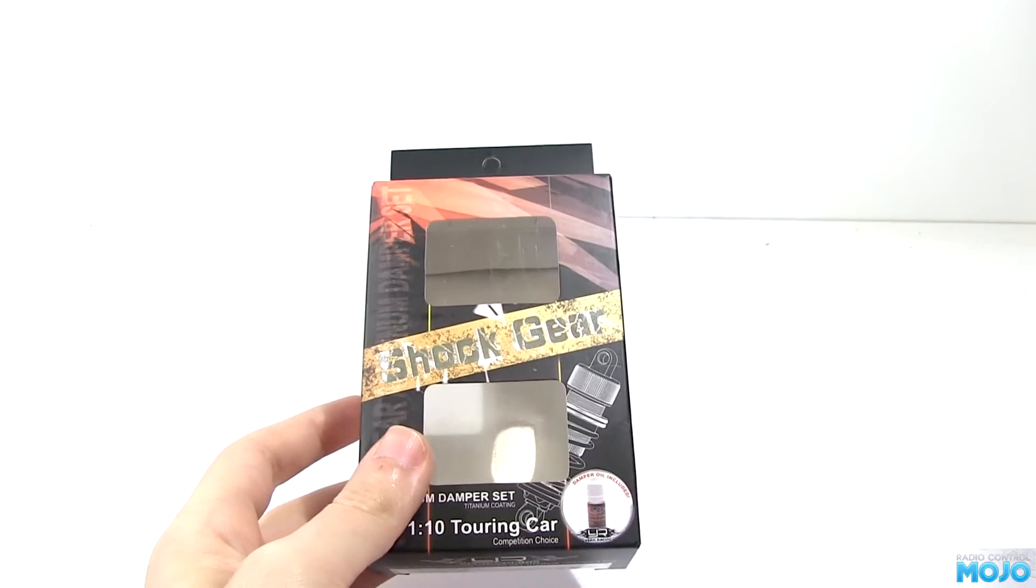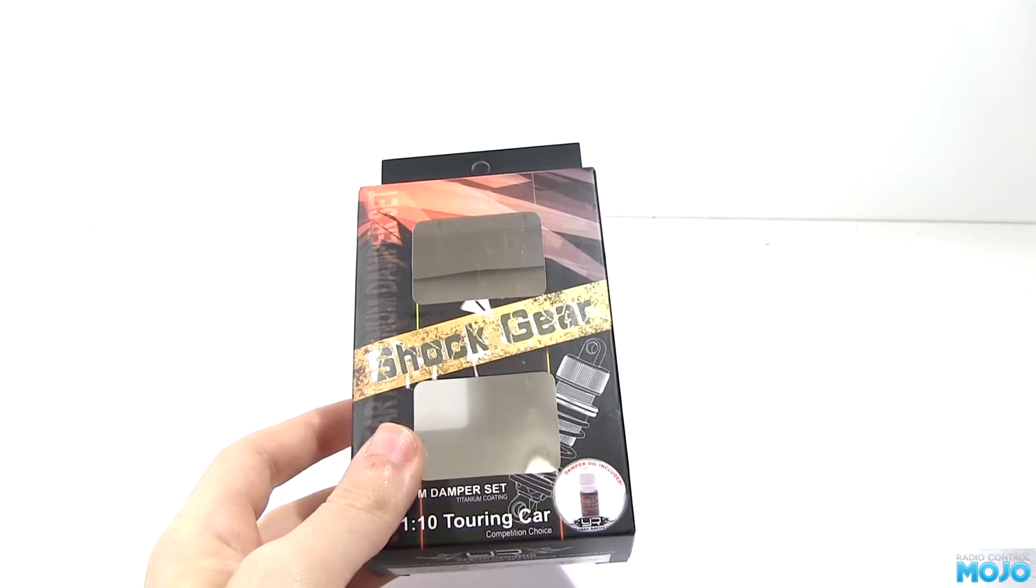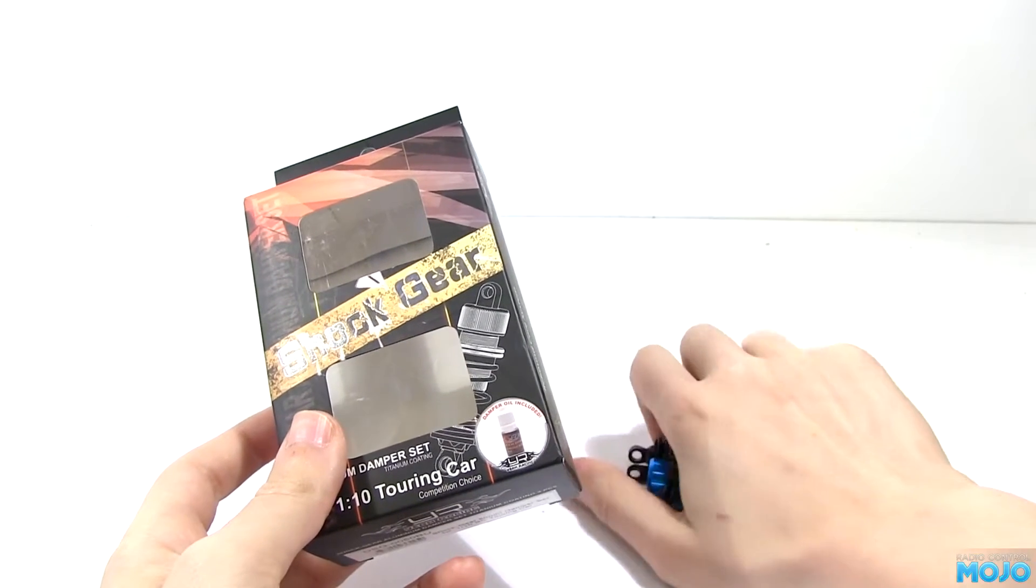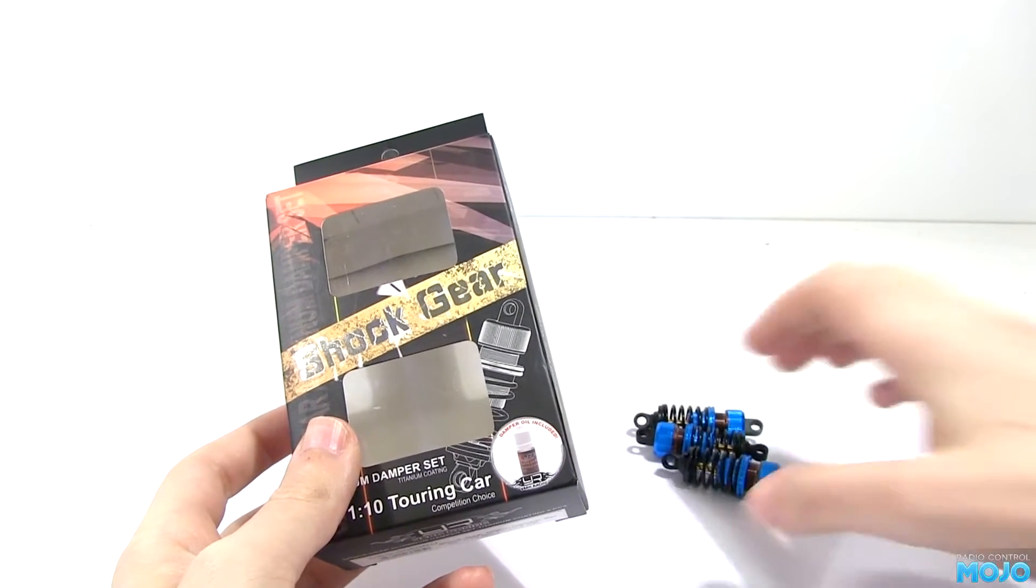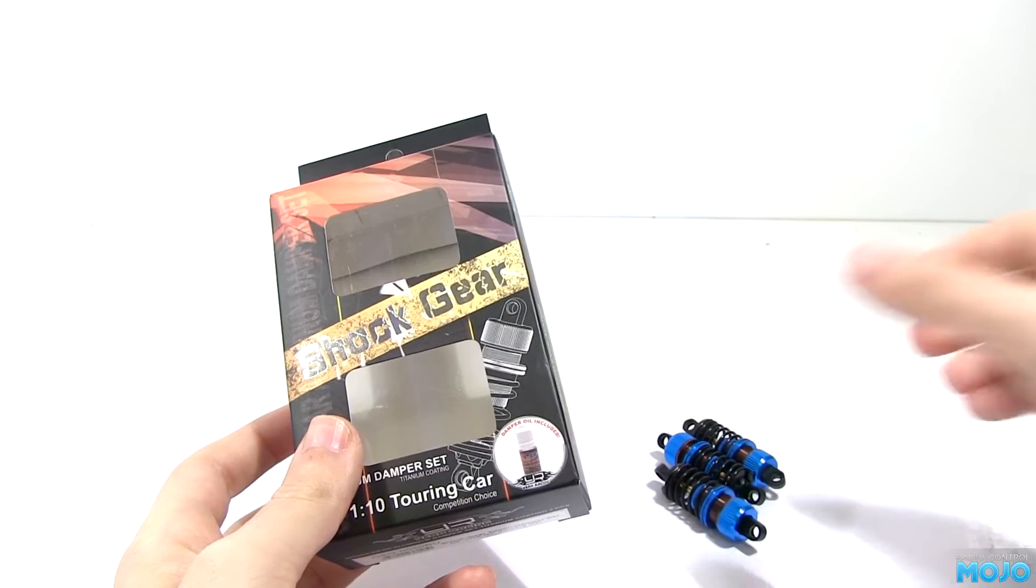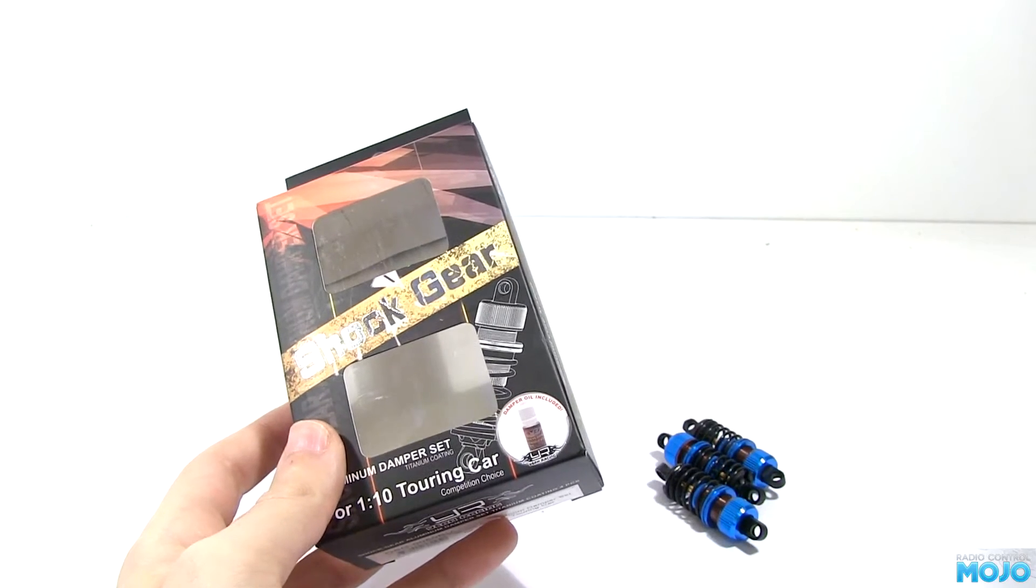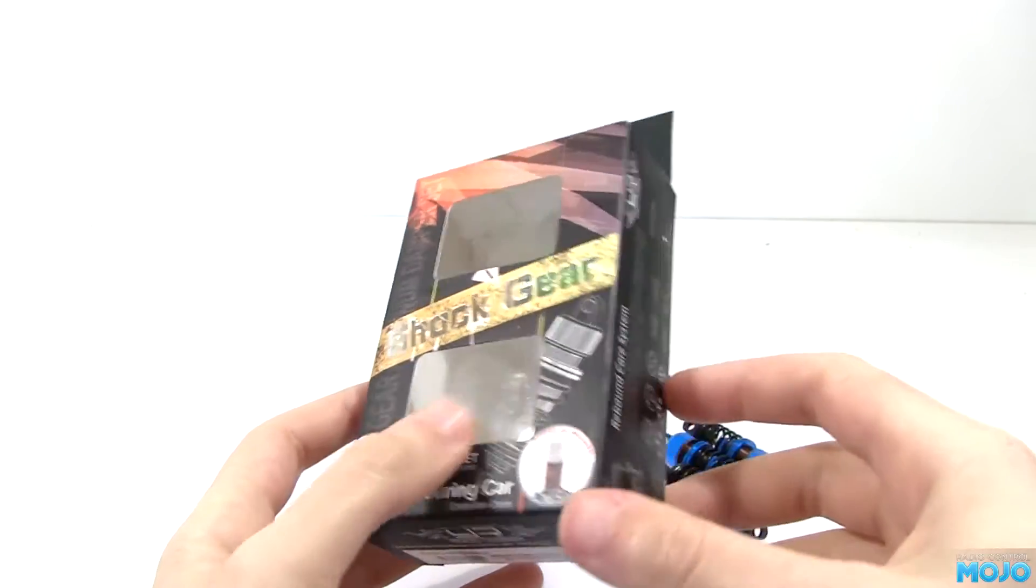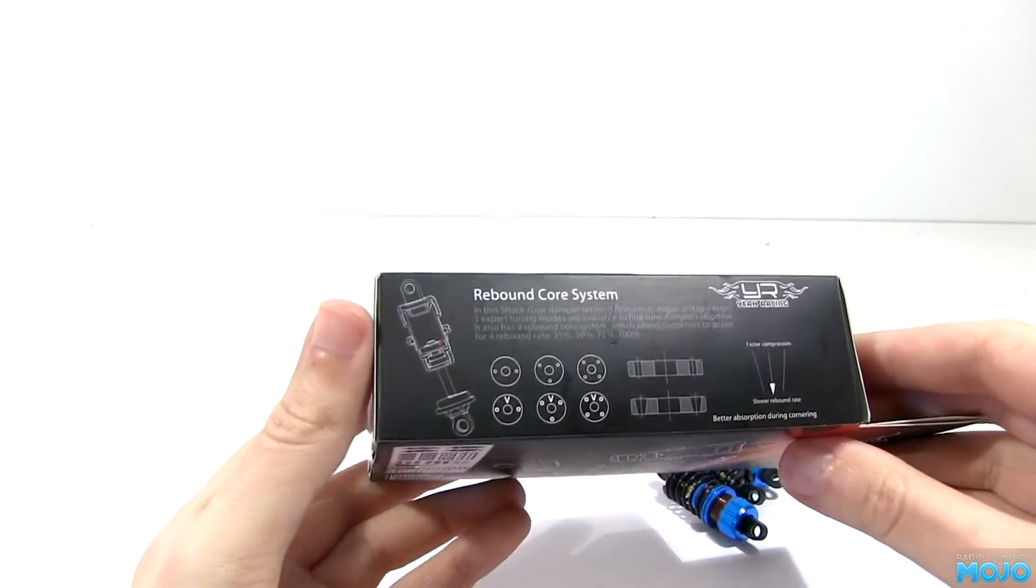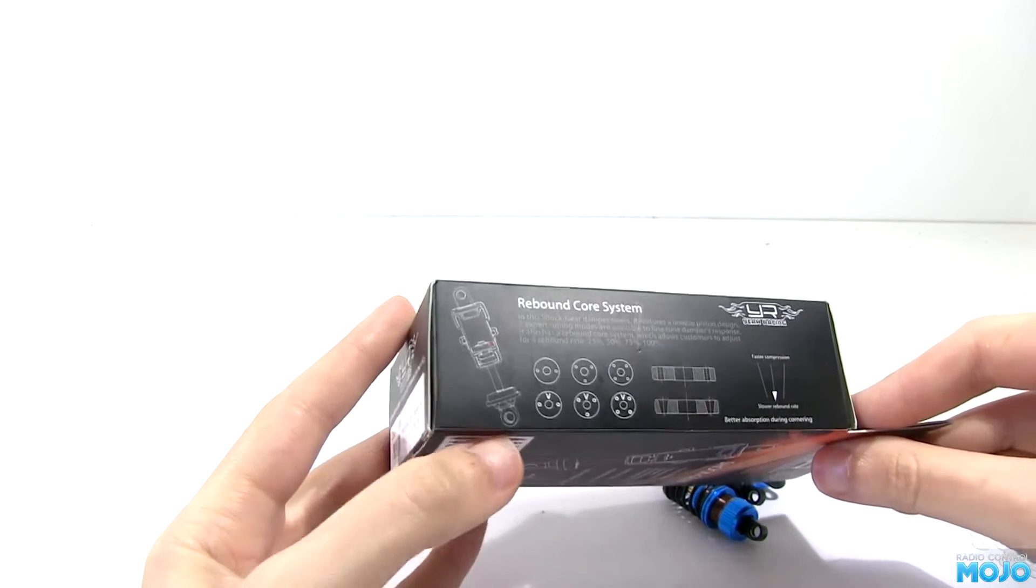You may be wondering why I'm showing you an empty box. Well, that's because the dampers have already been built for our article over at RCMojo.com. If you want some high res pictures, you'll want to have a poke around on there. The fourth damper has been stripped down so we can have a look at how it all goes together.